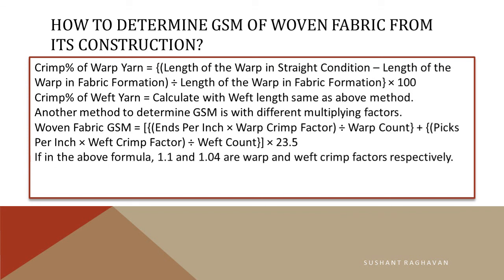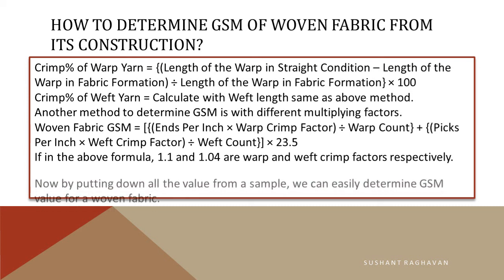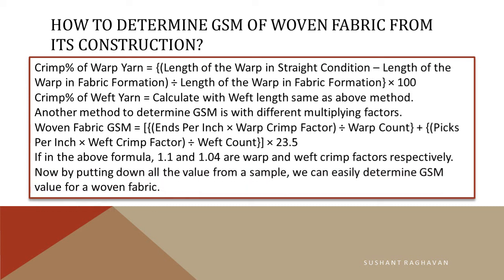In the above formula, 1.1 and 1.04 are the warp and weft crimp factors respectively. By putting in all values from a sample, we can easily determine the GSM value for a woven fabric.